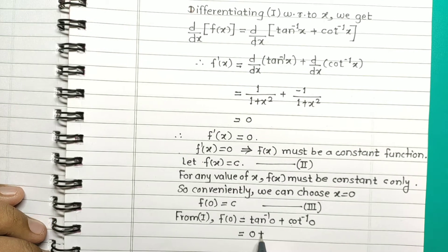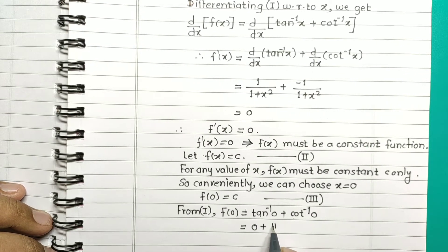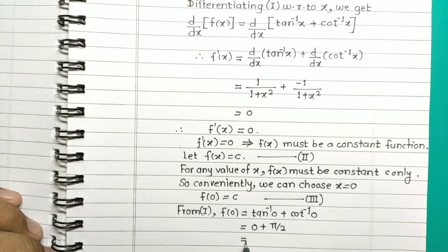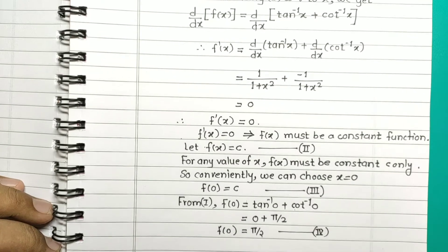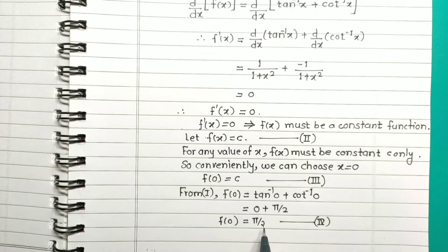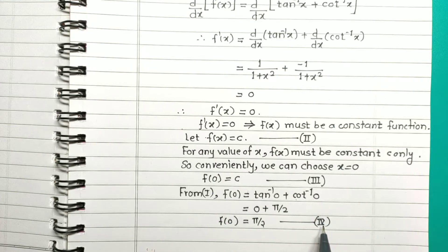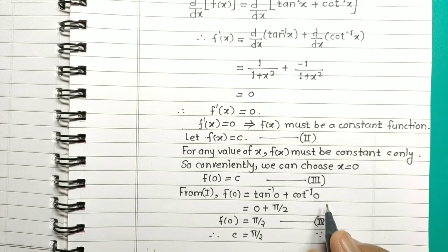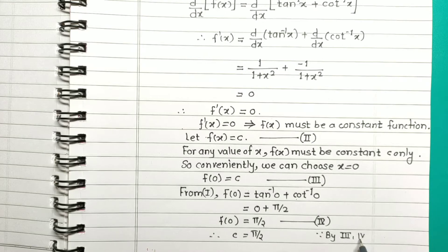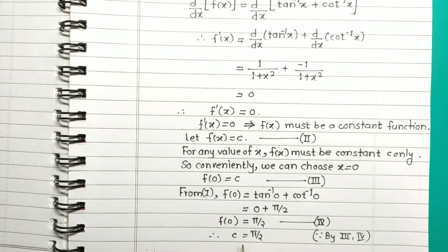Tan inverse of 0 is 0, and cot inverse of 0 is pi by 2. So f of 0 is pi by 2 — call this equation number 4. Now, we have f of 0 equal to pi by 2 from equation 4, and f of 0 equal to c from equation 3. So from equations 3 and 4, c is equal to pi by 2 — call this equation number 5.